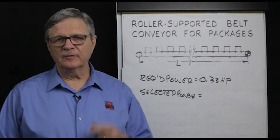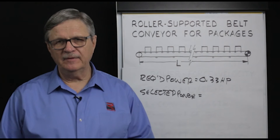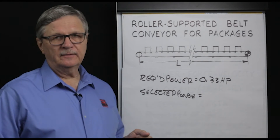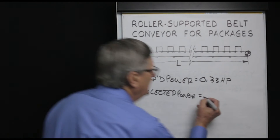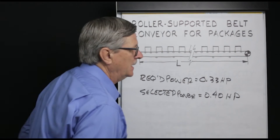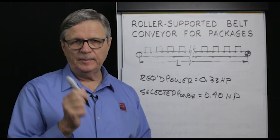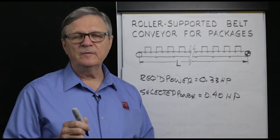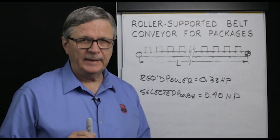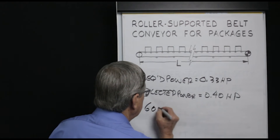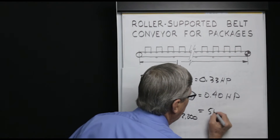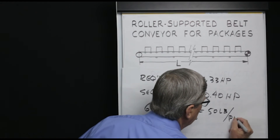Now let's pause before selecting our drive power and look at sensitivity analysis. We just calculated that 0.33 horsepower is required, and we might be tempted to select 0.4 horsepower. But suppose that the 50-pounds-per-package average was based on moving 600,000 pounds of cargo in 12,000 packages over an eight-hour shift — giving us an average of 50 pounds per package.